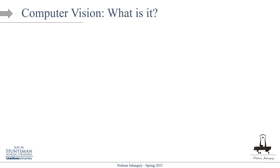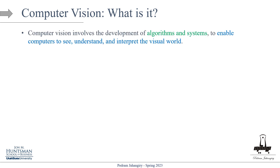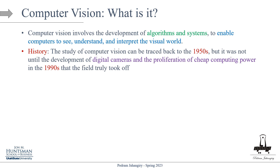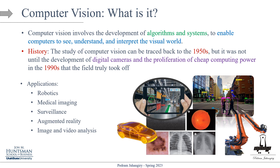Computer vision involves the development of algorithms and systems to enable computers to see, understand, and interpret the visual world. Historically, the study is relatively new and can be traced back to the 1950s, but the field truly took off with digital cameras and cheap computing power in the 1990s. Applications of computer vision are huge — from robotics and medical imaging to surveillance, augmented reality, and image and video analysis — and it's a rapidly growing field with potential to revolutionize many areas of technology and society.